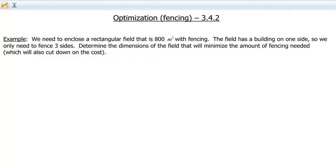The field has a building on one side, so we only need to fence three sides. Determine the dimensions of the field that will minimize the amount of fencing needed, which will then also cut down on the cost.